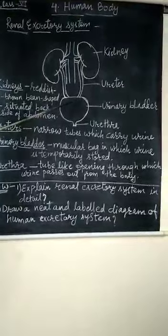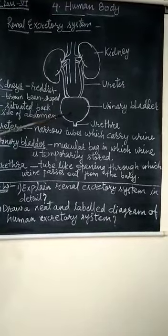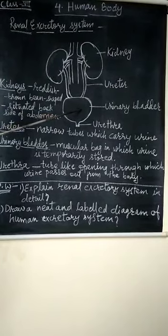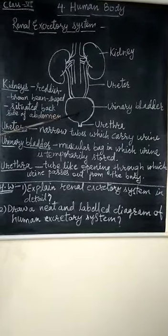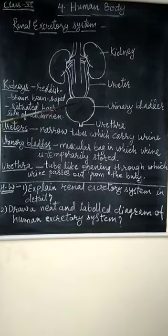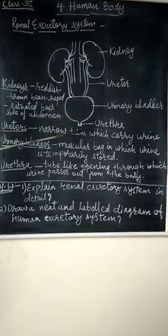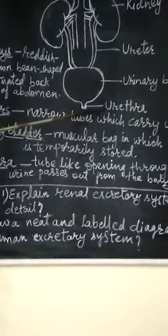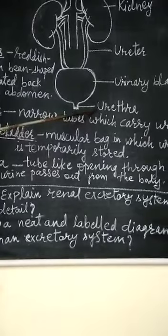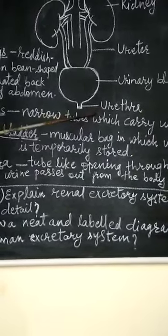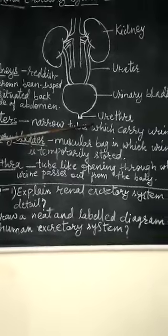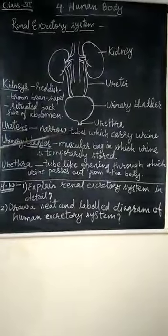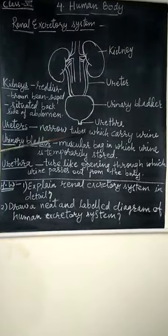The urinary bladder is a muscular, bag-like structure which helps in the temporary storage of urine. The last component is the urethra — it is a tube-like opening through which urine passes out from the body. The urethra is longer in males and shorter in females.